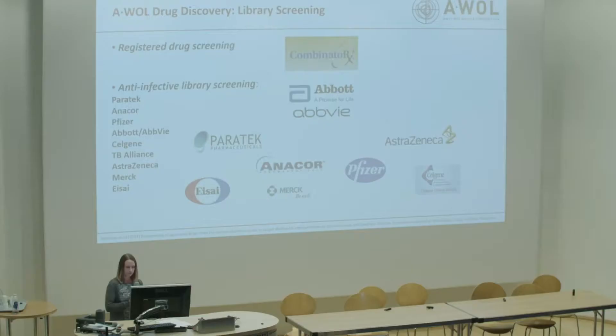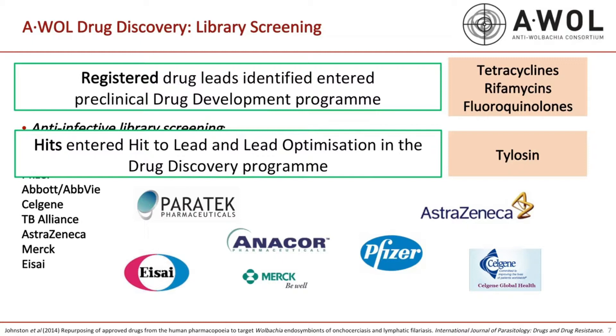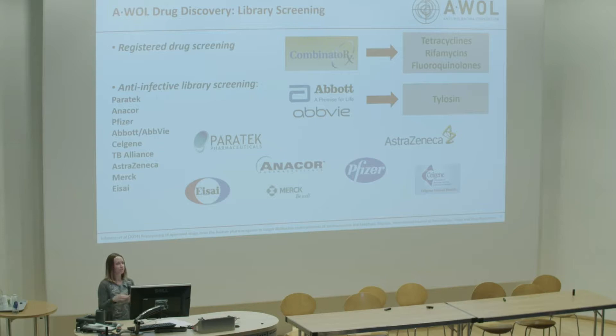The first thing we did with AWOL was test all the registered drugs — the human pharmacopoeia, which is only around 2,600 drugs. Back in 2007–2008 we did this in combination with a company called Combinatorics, along with small-scale anti-infective libraries from various partners. The usual suspects came out — tetracyclines and rifamycins, which we already knew were effective against Wolbachia — and the fluoroquinolones, which had shown discrepancies in earlier published systems, came out as good hits.